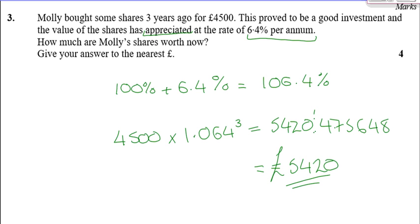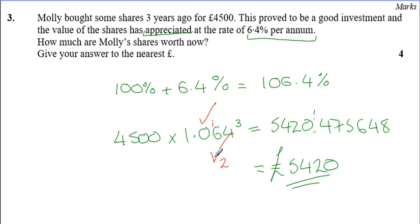Marks for question three: one mark for getting 1.064, one mark for setting up the whole equation — so 4,500 × 1.064³ — one mark for calculating the correct value, and then one mark at the end for your rounding.